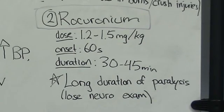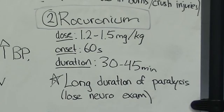The second paralytic we will discuss is rocuronium, or ROC. ROC is a non-depolarizing agent that does not bind to the motor end plate like succinylcholine, so you do not see the contractions or fasciculations seen with succs. Instead, rocuronium acts as a competitive inhibitor that competes for motor end plate sites with acetylcholine.